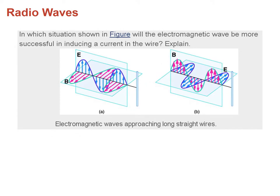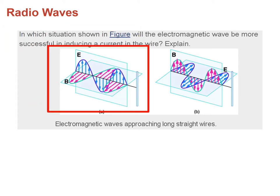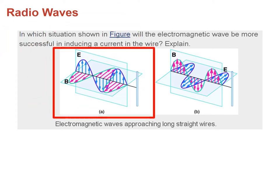If you want to receive a signal through the electric field, how would you place the antenna? If the field is oscillating in the vertical direction, the answer is that you must place the antenna vertically, because the oscillations are in the vertical direction, so the antenna has to be vertical in order to receive the signal.